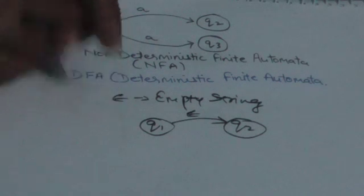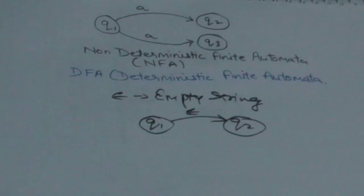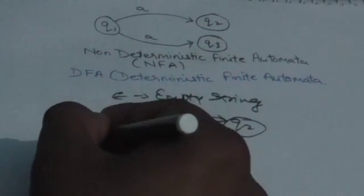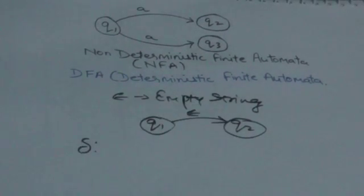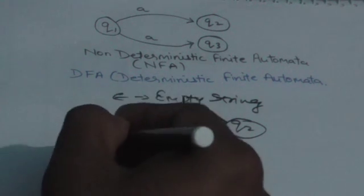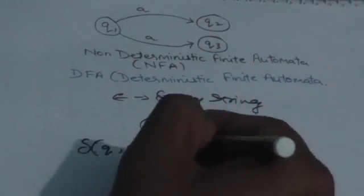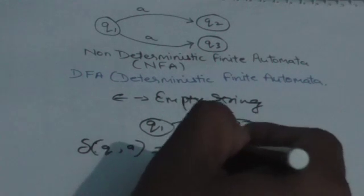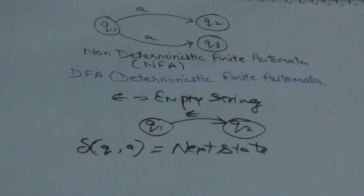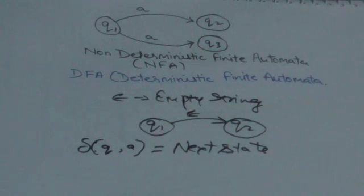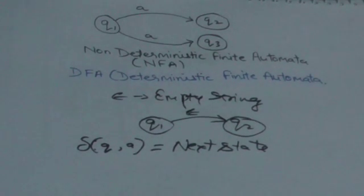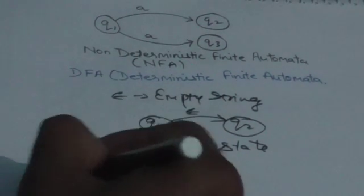Now there is a difference between DFA and NFA transition functions. The transition function of a DFA takes two parameters — the current state and the input symbol — and gives a single state as output, which is the next state. But in the case of NFA, it is not determined what the next state would be.